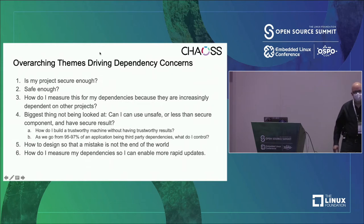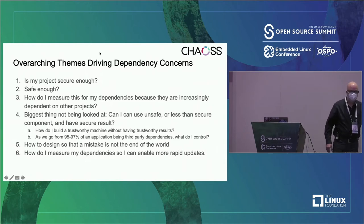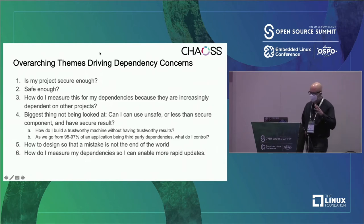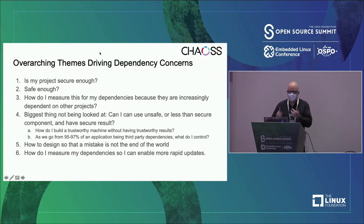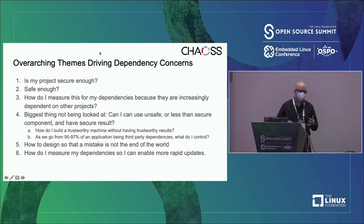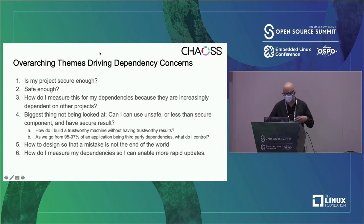We had to mull through a lot of information because there are a lot of different organizations and components of organizations that have some concern with dependency and security. The questions people who run open-source project offices ask are: is my project secure enough, safe enough? How do I measure the dependencies? This has become a very significant concern recently.